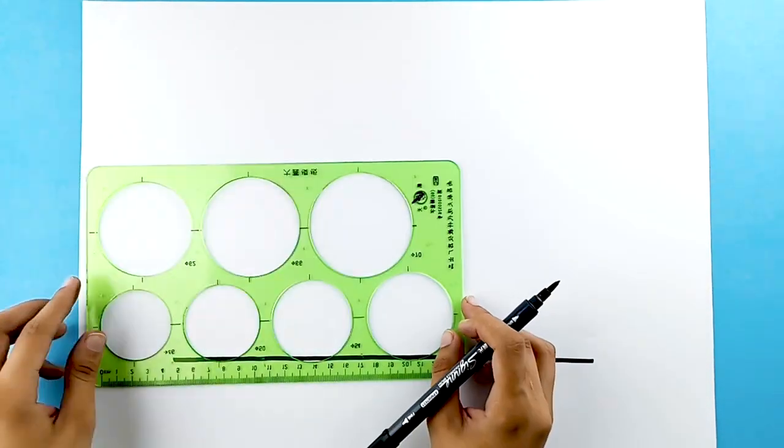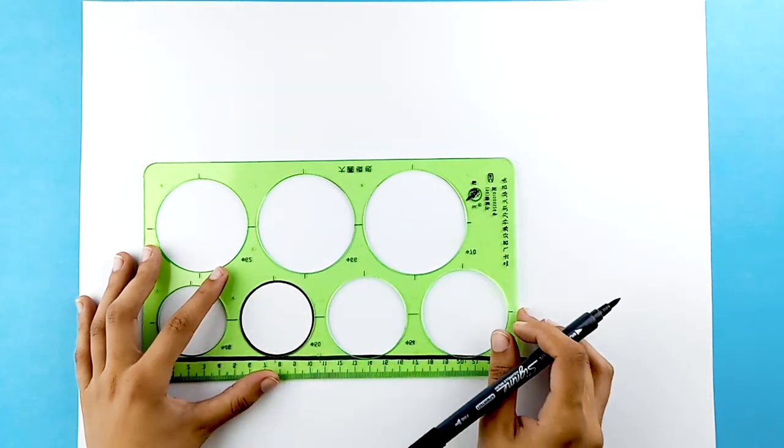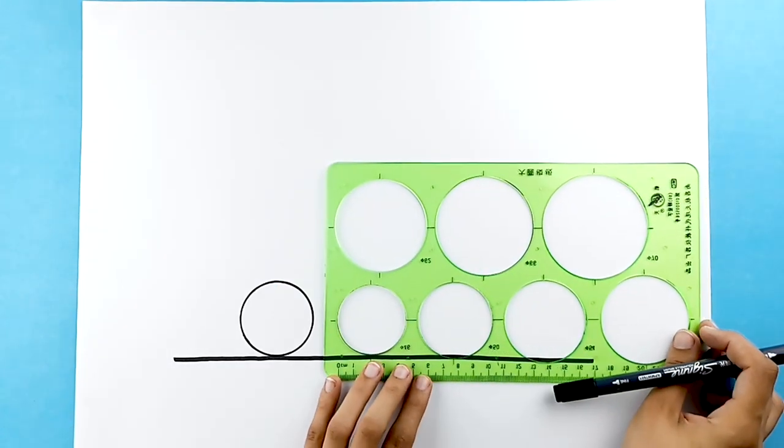If you don't have a ruler like mine, you can simply use any small-sized circular object, like a coffee cup. Draw two smaller circles inside.